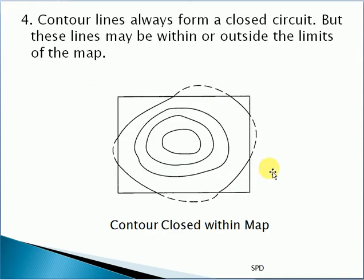The contour lines always form a closed circuit, but these lines may be within or outside the limit of the map.